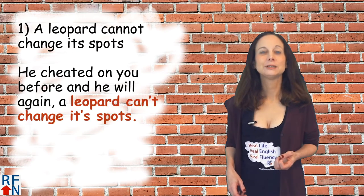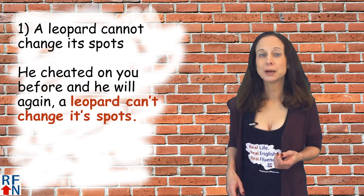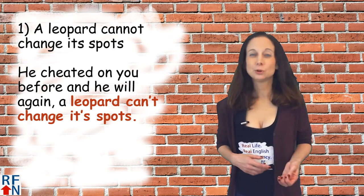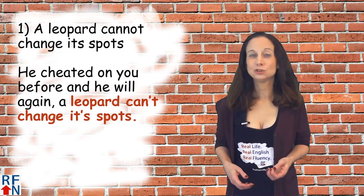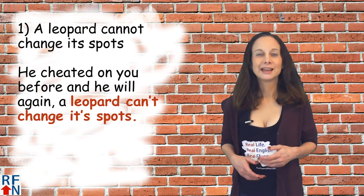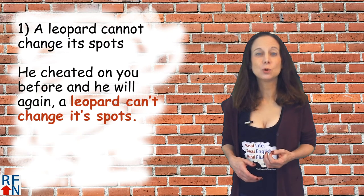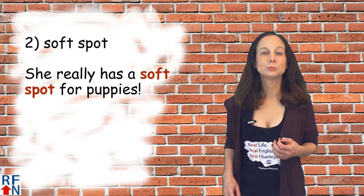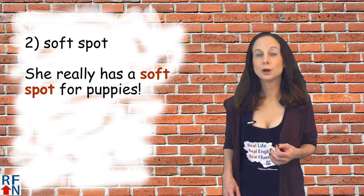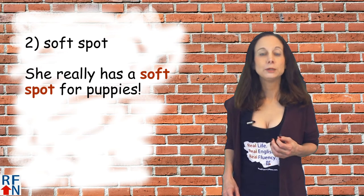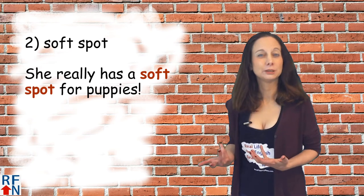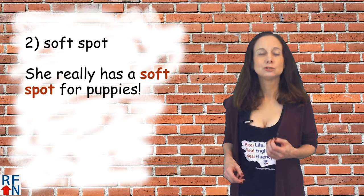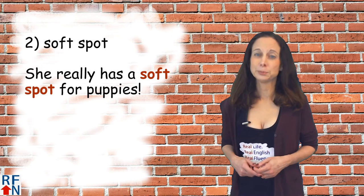There are also a bunch of idioms that use the word spot. The first is 'a leopard cannot change its spots,' which means that people don't usually or can't usually change — as in 'he cheated on you before and he will again; a leopard can't change its spots.' Number two is to have a soft spot, meaning a weak point or tender loving feelings towards someone, as in 'she really has a soft spot for puppies.'